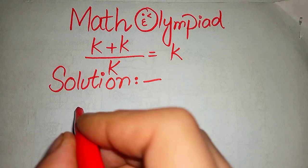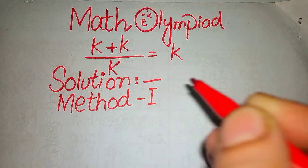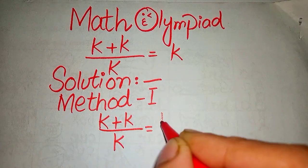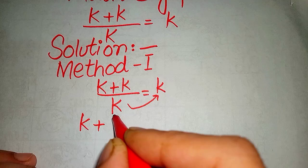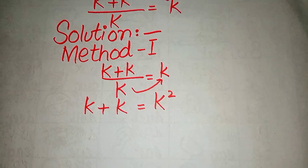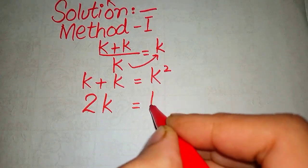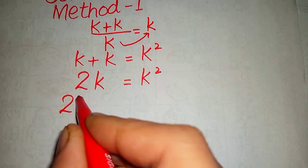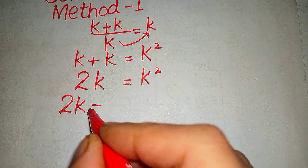First of all, we apply Method 1 for solving this equation. k plus k over k equals k. When we take this k to the right side it would become k squared, so our equation becomes k plus k equals k squared. This k plus k becomes 2k equals k squared.